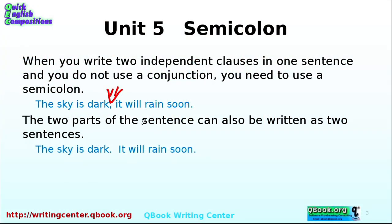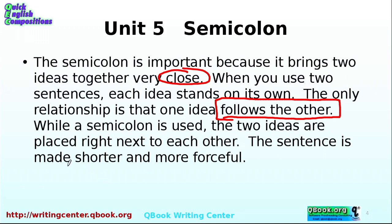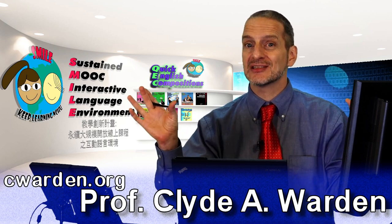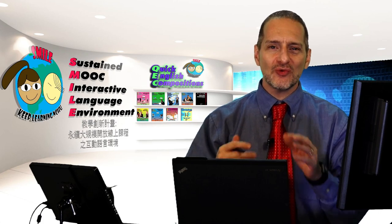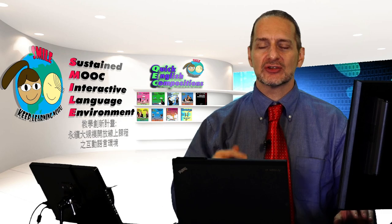The semicolon really helps you to put two ideas very close to each other. The only relationship they need to have is that one follows the other. If those two ideas go right next to each other, then you make the sentence shorter — because you're not using two sentences anymore. You also give it a feeling of force or power. You don't want to do it too often, but just remember it's the same as using a comma and a conjunction: two sentences basically coming together. Once in a while is good — maybe once or twice inside an essay, but not every paragraph. Good luck.